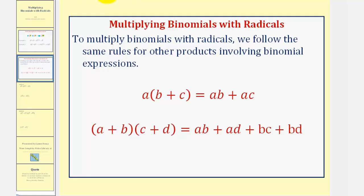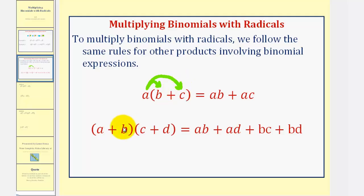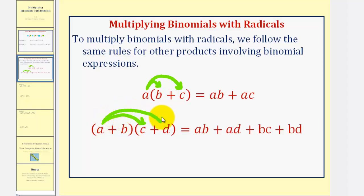If we have a monomial times a binomial, we'll have two products. We distribute and have a times b plus a times c. And if we have a binomial times a binomial, we'll have four products — we can think of this as double distribution. We distribute the a, giving us a times c plus a times d, and then distribute the b, giving us b times c plus b times d.